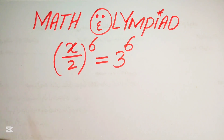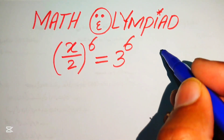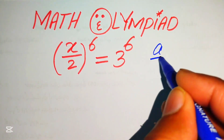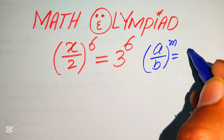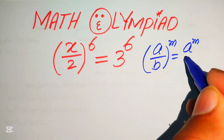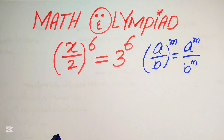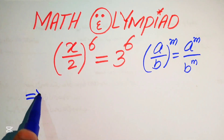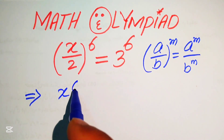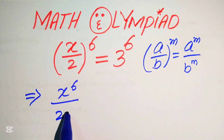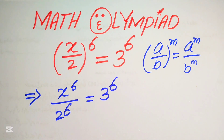First we need to use the exponent law: if we have (a/b)^m, we write it as a^m divided by b^m. According to this exponent law, we write this term as x^6 divided by 2^6, and it equals 3^6.